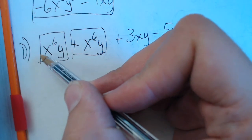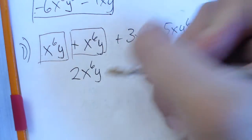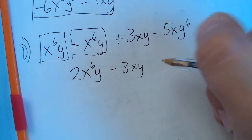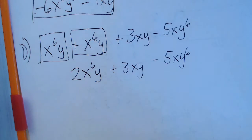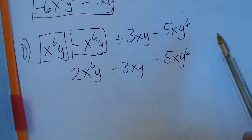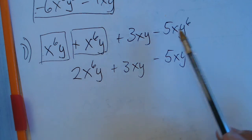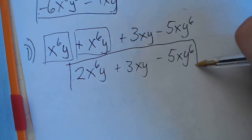So all we have to do here is add this one. 1 plus 1 is 2. So we get 2x to the power of 6y plus 3xy minus 5xy to the sixth. Now, the common mistake here would be to call this a like term of this because they both have an exponent of 6. But you'll see that the exponent here is on the y instead of the x. So that is our final answer.